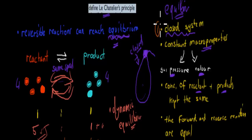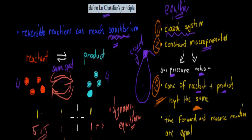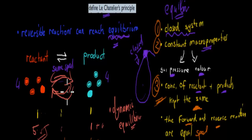So these are the four conditions needed for equilibrium. We need a closed system. We need constant macro properties such as gas pressure, color, and temperature. We need the concentration of reactants and products to be kept the same — whether that's a one-to-one or five-to-one ratio, it must remain constant. And the forward and reverse reactions must occur at equal speed, so that overall everything is kept constant.